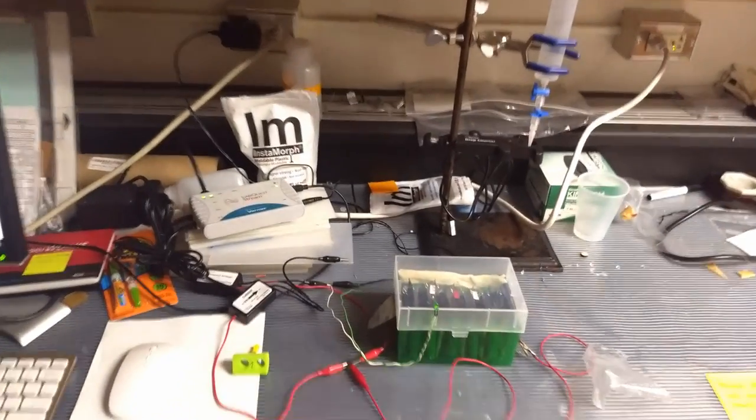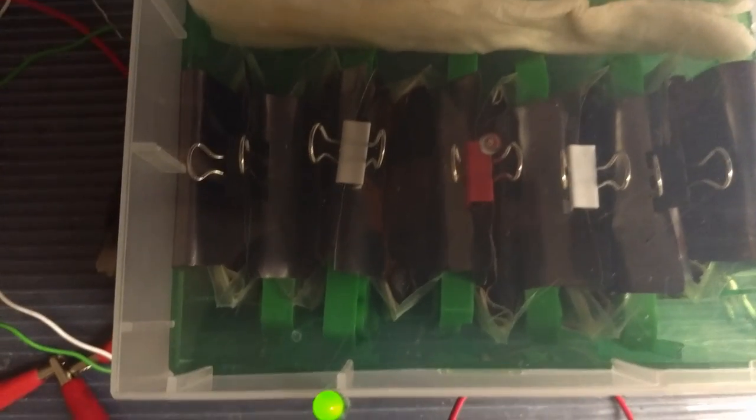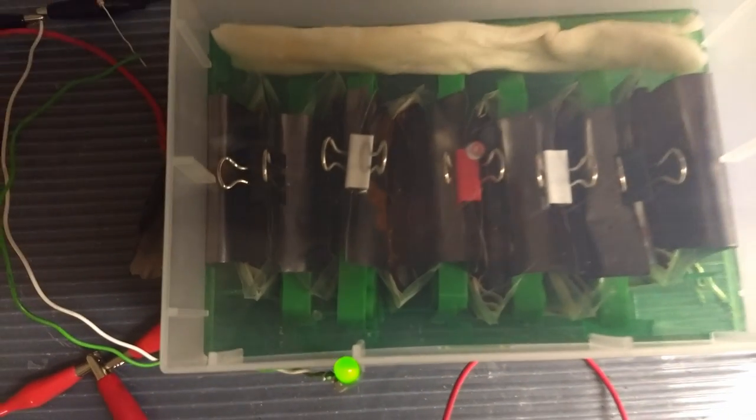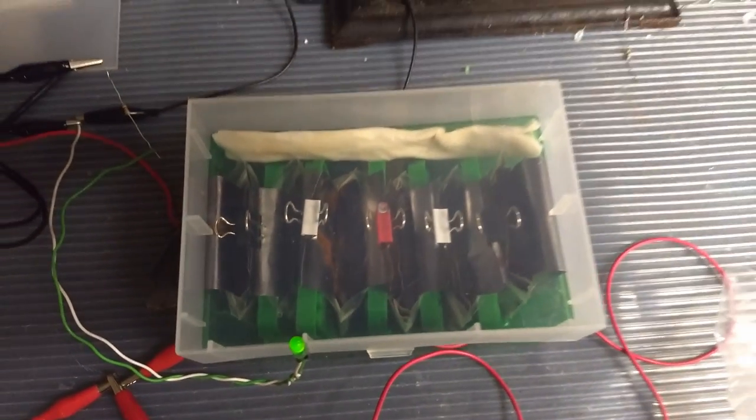Once we assembled six of those, we put them in series in this green box. Binder clipped the current collectors together and then connected it up to that green LED, as well as to a logging voltmeter and a logging ammeter to collect the performance data over the course of several hundred hours.